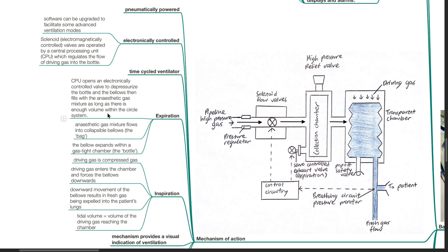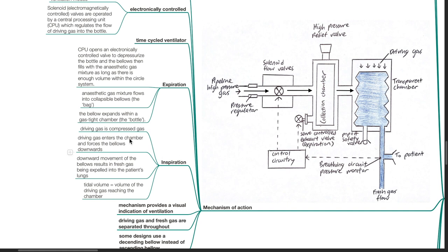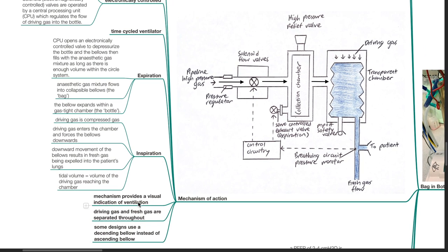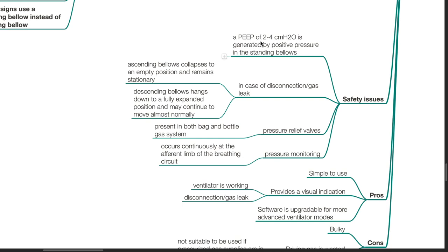Anesthetic gas mixture flows into collapsible bellows. The bellows expand within a gas-tight chamber known as the bottle. During inspiration, the driving gas is compressed gas. Driving gas enters the chamber and forces the bellows downwards. Downward movement of the bellows results in fresh gas being expelled into the patient's lungs. The tidal volume equals the volume of driving gas reaching the chamber. This mechanism provides a visual indication of ventilation. Driving gas and fresh gas are separated throughout. Some designs use a descending bellows instead of an ascending bellows. In case of disconnection or gas leak, a standing ascending bellows will collapse to an empty position and remain stationary, whereas descending bellows may continue to move almost normally. Hence, ascending bellows indicate disconnection or gas leaks better than a descending bellows system.